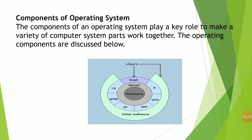If you observe this figure, a user will not directly communicate with the hardware. First, the user communicates with the shell, then the shell communicates with the kernel, and from the kernel the hardware gets instructions. The shell acts as an interface to the operating system — it is the outermost layer of the operating system and manages interaction between you and the operating system. A shell provides a way for you to communicate with the operating system, either interactively (input from keyboard) or as a shell script. A shell script is a sequence of system commands stored in a file.